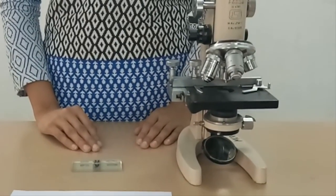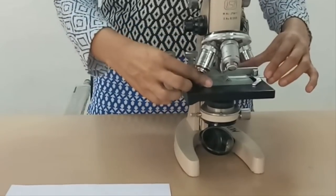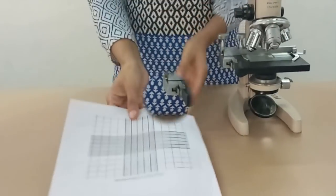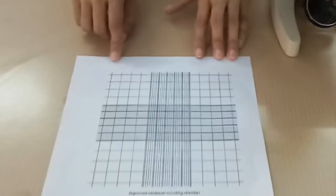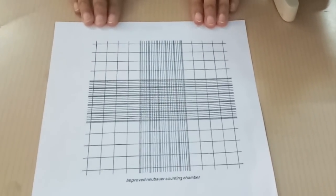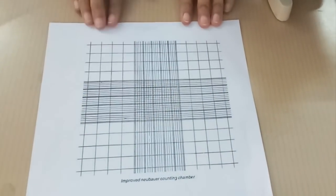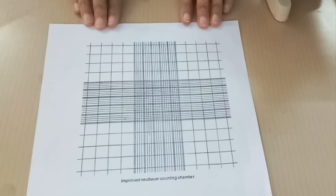Next step is move the Neubauer chamber to the microscope and focus the ruled area. This is the improved Neubauer chamber view under low power. You can see these 4 corner squares, they are WBC counting squares in the Neubauer chamber under low power.